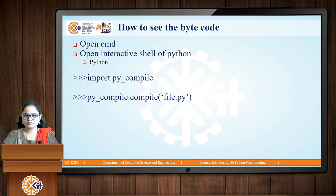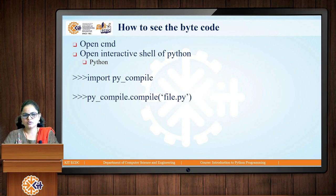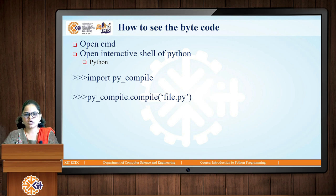To view the bytecode of your program, open the command prompt and launch the Python interactive shell by typing 'python'. Then import the py_compile library and call py_compile.compile() providing your filename. A .pyc file will be created, and you can examine the bytecode inside it. This will also be demonstrated in the next session.